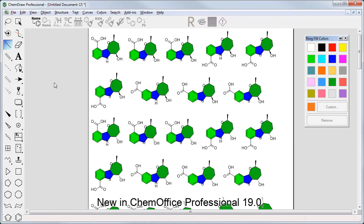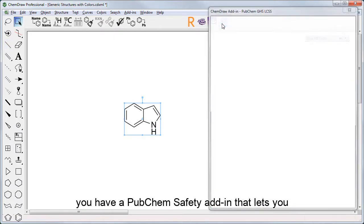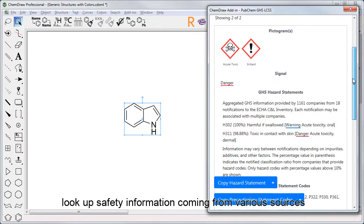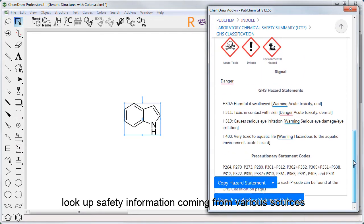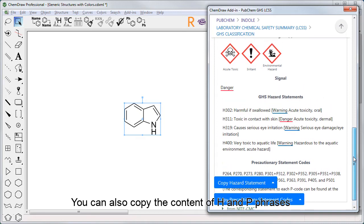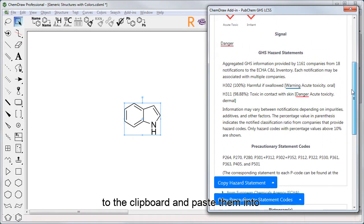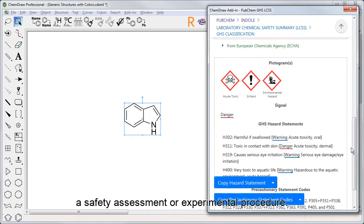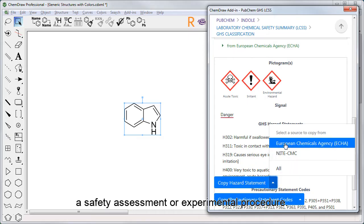New in ChemOffice Professional 19, you have a PubChem Safety Add-In that lets you look up safety information coming from various sources. You can also copy the content of H&P phrases directly to the clipboard and paste them into a safety assessment or an experimental procedures.